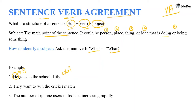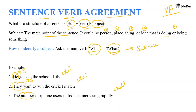'They want to win the cricket match.' Who wants to win the cricket match? They do — so 'they' becomes our subject. 'The number of iPhone users in India is increasing very rapidly.' What is increasing? The number of iPhone users. So when you can answer 'who' or 'what,' you get the subject of the sentence.